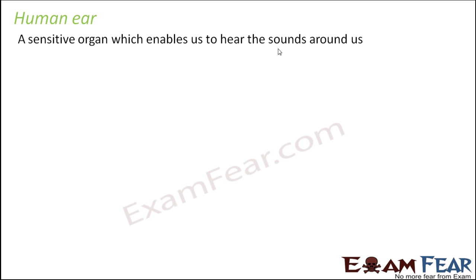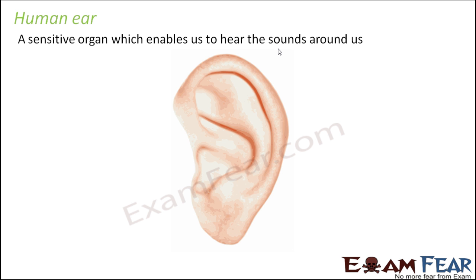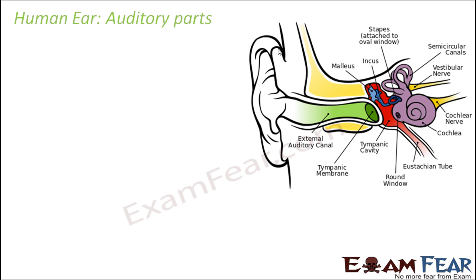The ear is a sensitive organ which enables us to hear the sounds around us. Let us look at the different parts of the ear so we can understand how it helps us hear. The entire structure of the ear is divided into three parts: outer ear, middle ear, and inner ear.